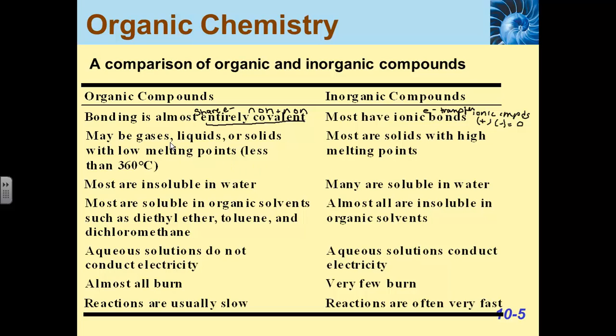Organic molecules may be solids, liquids, or gases with very low melting points. Again, these are all characteristics of molecular compounds. Ionic compounds, which are inorganic salts, typically are solids with very high melting points. And again, think of these as commonly called salts.